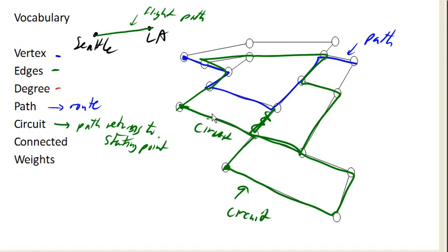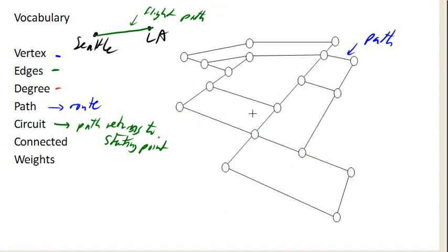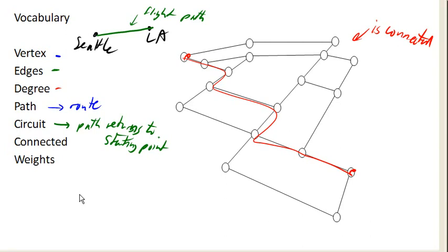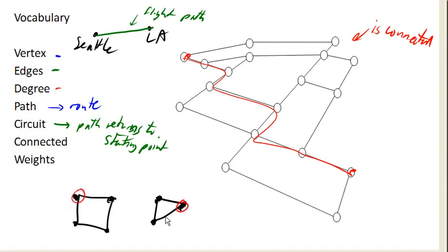Later we'll talk about the idea of covering all the edges with a circuit, but that's a different problem, so we're not quite there yet. The next idea is called connected. This graph is connected because if I pick any two vertices, there is a path that will get me from one to the other. In contrast, consider a graph where we have three vertices over here and four vertices over here — if I were to pick one vertex from each group, there is no way to get between those two vertices, and so this is not connected. In most of what we're going to be doing in this class, we'll be looking at connected graphs.